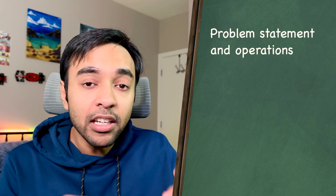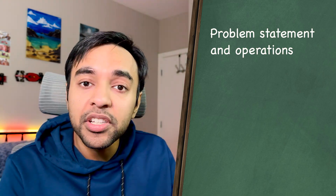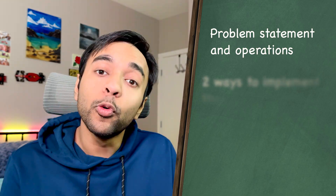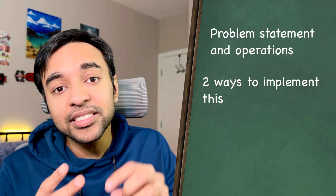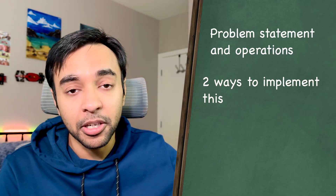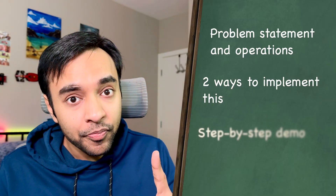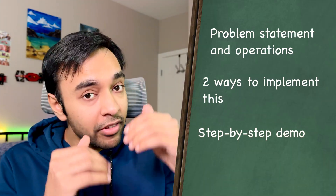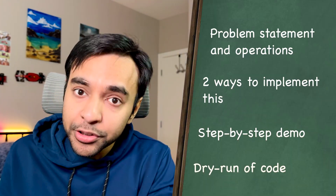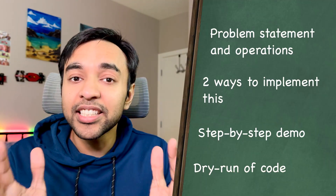So let's see what we can do about it. Hello friends, welcome back to my channel. First, I will go over the problem statement and discuss what operations you need to implement. I will tell you two methods: how you can implement the stack data structure by using two queues, or just by using a single queue. After that, we will see a step-by-step demo and do a dry run of the code. Without further ado, let's get started.